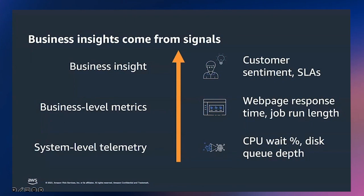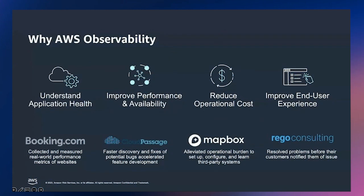Increasingly, downtime in applications and services costs money. Therefore, it is critical to resolve real issues as close to real-time as possible, helping you maintain critical SLOs such as availability, reliability, and latency. AWS can help you gain these insights — understanding your application and infrastructure health, improving performance and availability, reducing operational cost via fully managed services, and increasing customer satisfaction by improving end-user experience.